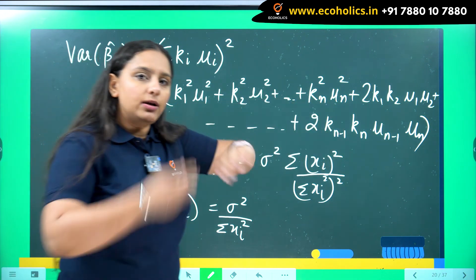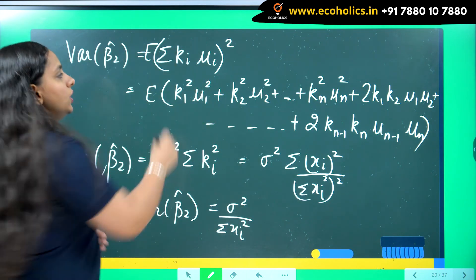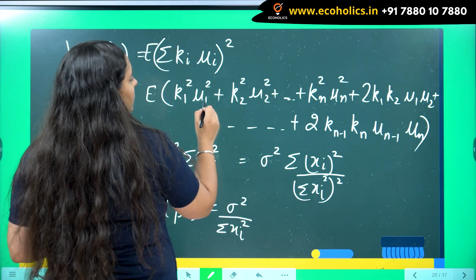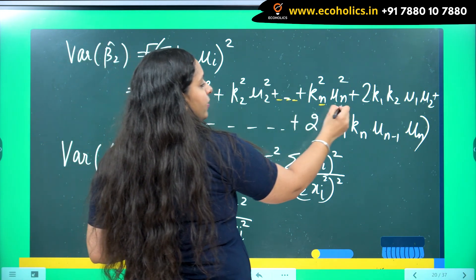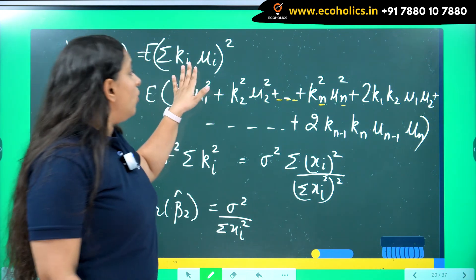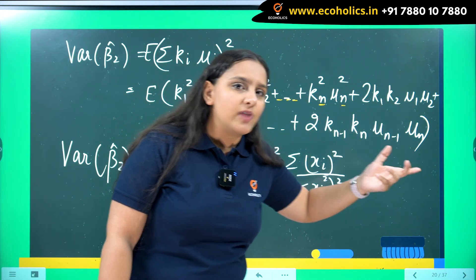Summation k i mu i means that i is going to change its value and I am going to add all the terms. Alright. So k 1 square mu 1 square plus k 2 square mu 2 square, likewise till the value of n.